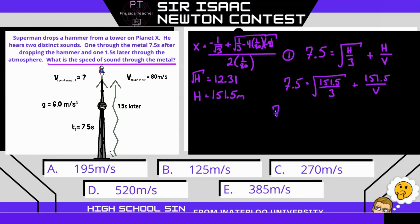So that gives us 7.5. We can bring this term to the other side, so we're going to subtract, and it's equal to 7.106, and that is equal to 151.5 over v. So we can cross multiply here if we put these in brackets. Cross multiply, we get v equals 151.5 divided by that bracket, which is equal to 385 meters per second. Our answer is E.